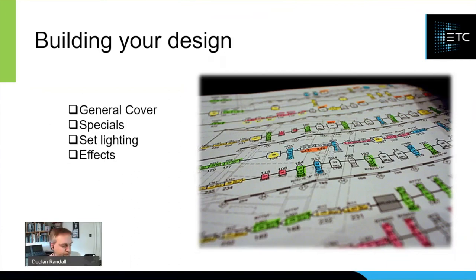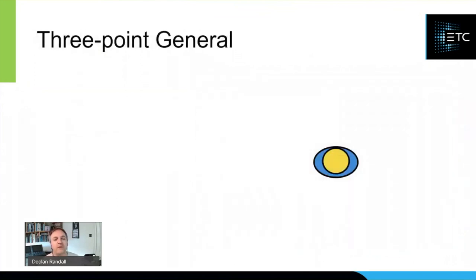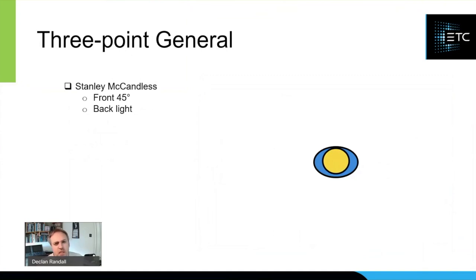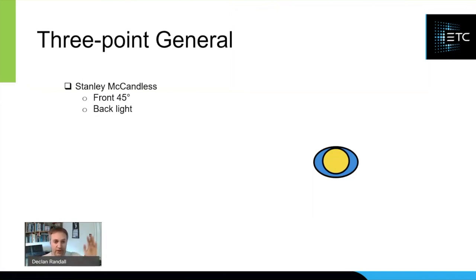Let's look at breaking down our general cover. You may often hear people talking about a three-point general. The general is just providing an even wash of light on stage that can catch actors no matter where they're moving. This was originally conceived by Stanley McCandless back in 1936 in his book A Method for Lighting the Stage. His principle was using a front 45-degree angle and a backlight — two lights elevated 45 degrees up and 45 degrees out from either side per area, plus a backlight. This is a really solid base for your stage.